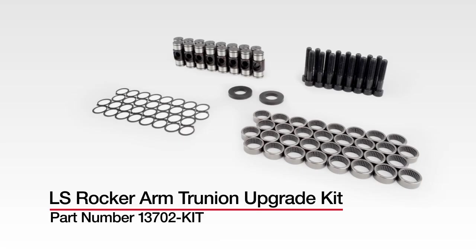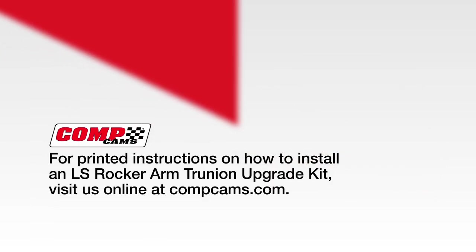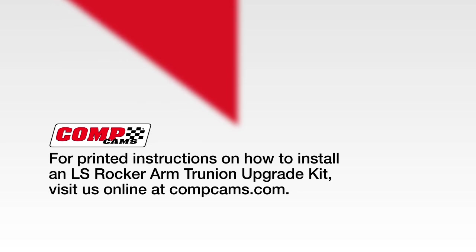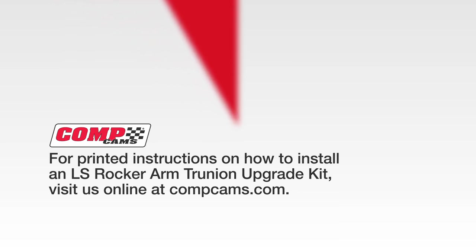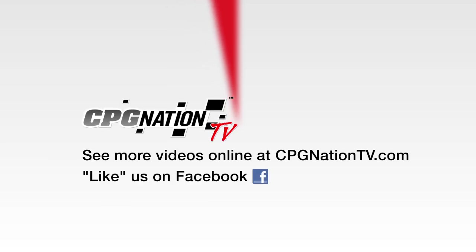The LS Rocker Arm Trunnion Upgrade Kit used in this video is part number 13702-kit. For printed instructions on how to install an LS Rocker Arm Trunnion Upgrade Kit, visit us online at compcams.com. Also, be sure to like us on Facebook. Good luck.